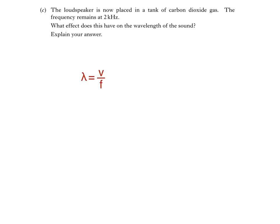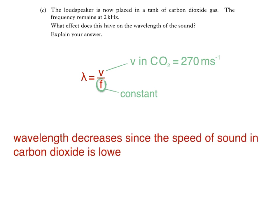Here's the wave equation we saw earlier, but rearranged to make wavelength lambda the subject. We've been told that the frequency of the sound hasn't been changed, and looking at the datasheet, you'll see that the speed of sound in carbon dioxide is lower than it is in air, at 270 meters per second. Since frequency is constant, a lower speed will result in the wavelength reducing. So, wavelength decreases since the speed of sound in carbon dioxide is lower.